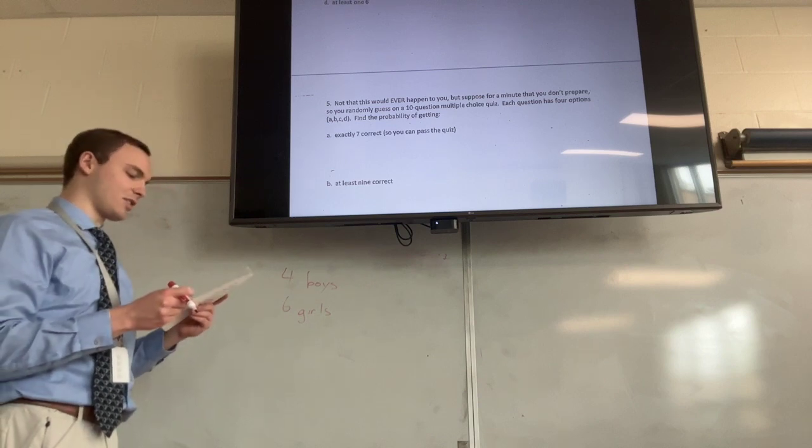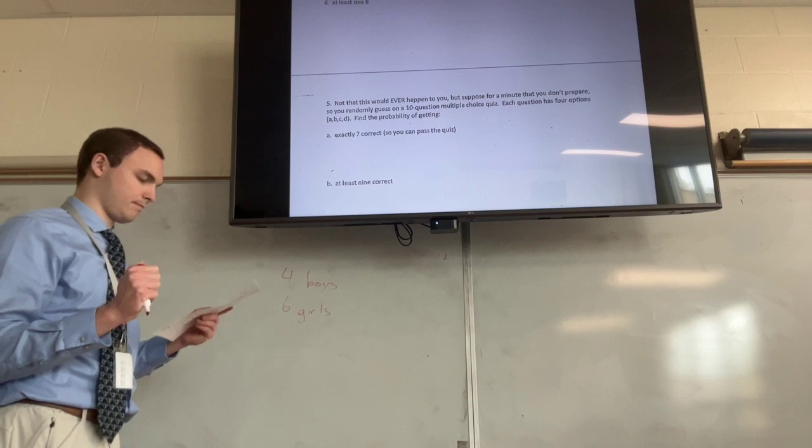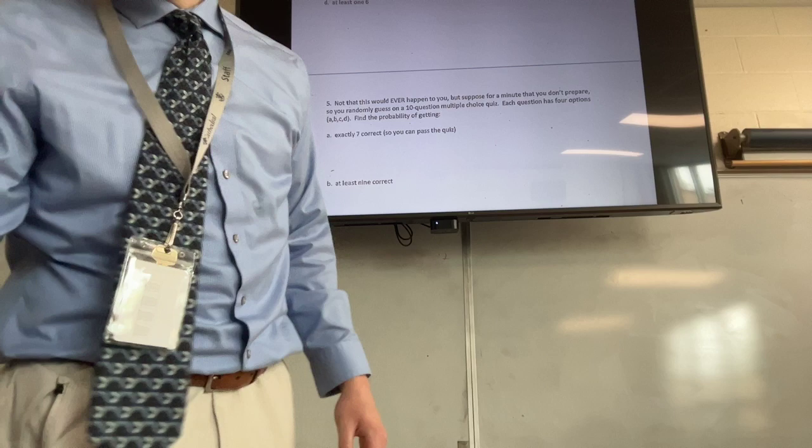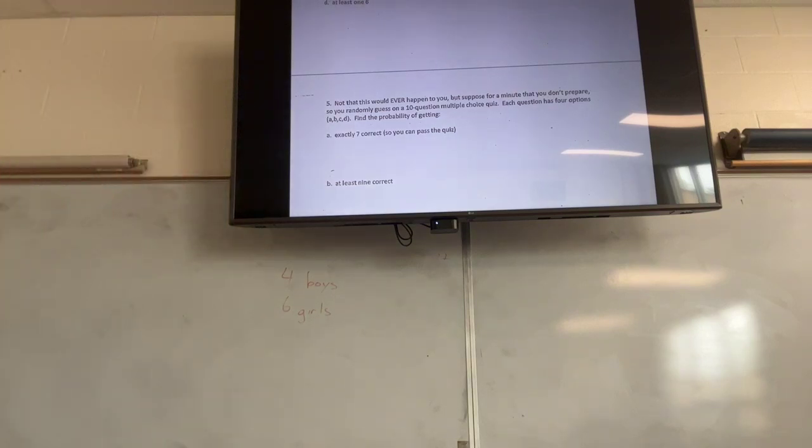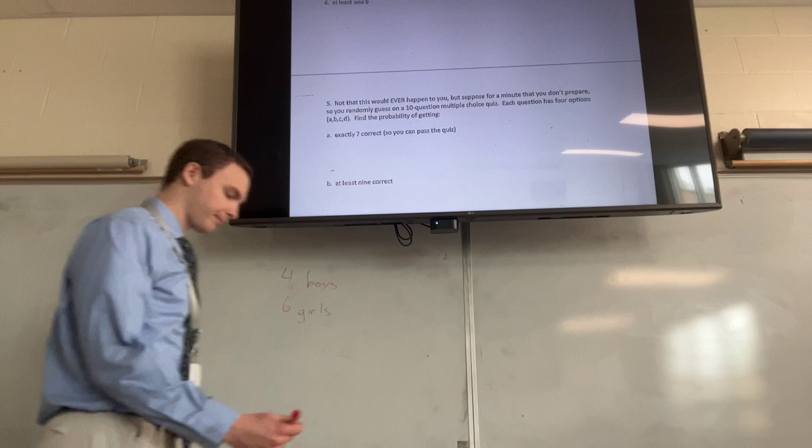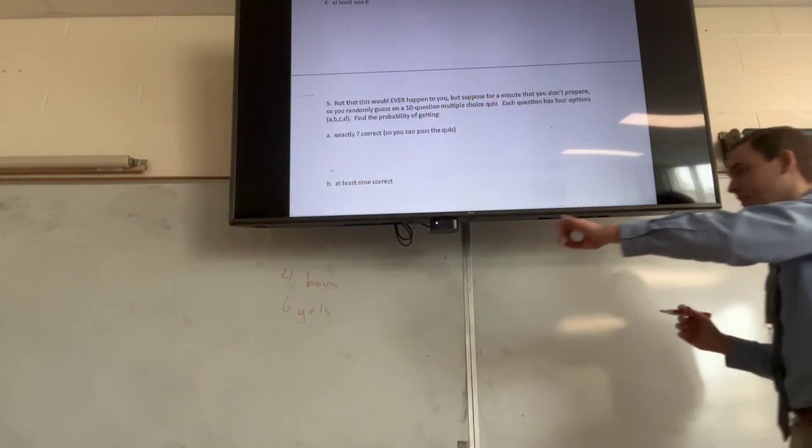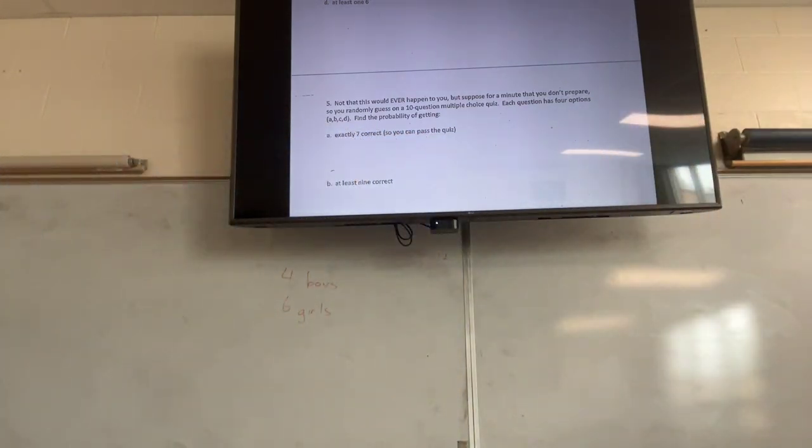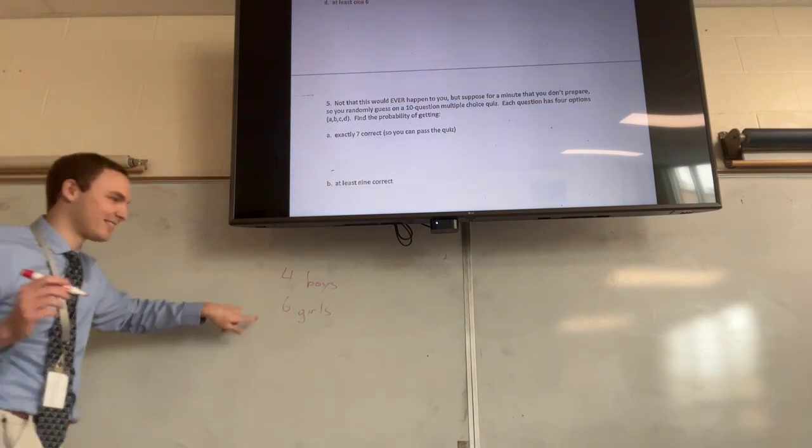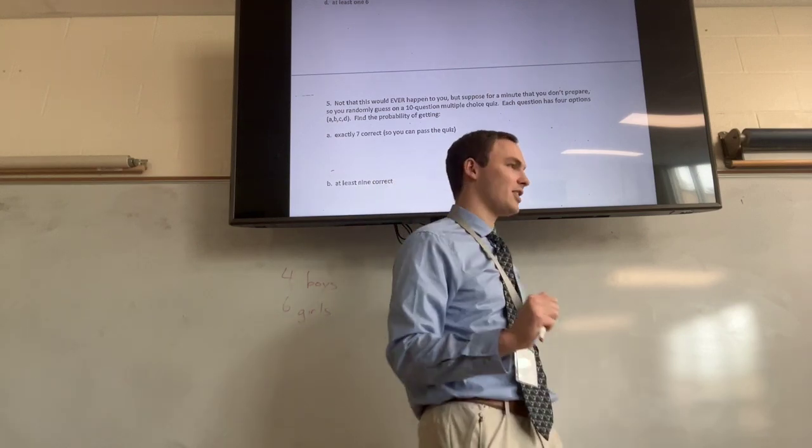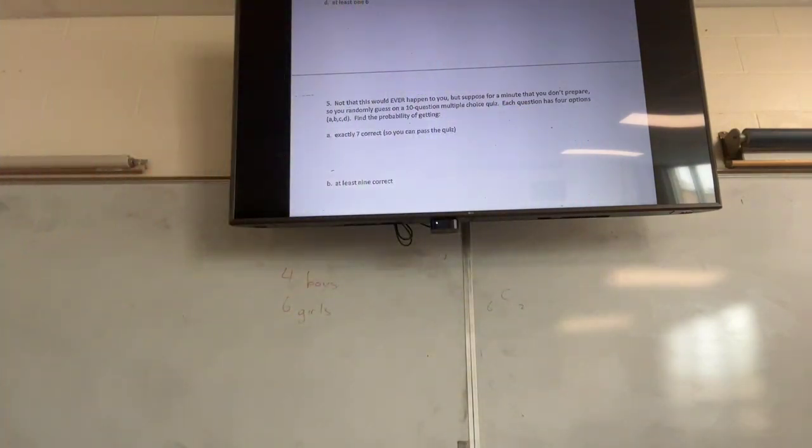So here's what's going on. You're going to line them all up, and you have to have a girl on each end. So I'm going to pick, I have six girls. I have to choose two of them to put on the end. So how many different combinations of girls are there for the ends? Do you know how I do that? And how many combinations are there?